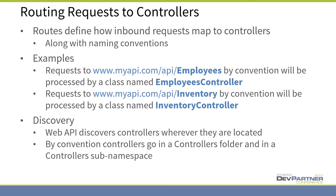Routing requests to controllers. There is what's called a routing table that defines how any incoming request is routed to the appropriate action. For example, if a request comes into www.myapi.com/api/employees, by default, unless you've done custom configuration, that will be routed to a class called EmployeesController. That class can be anywhere — it doesn't have to be in a Controllers folder in the same assembly. It will find it, even if it's in a referenced assembly in a different language, which is quite handy because that's exactly what we're going to do with Synergy.